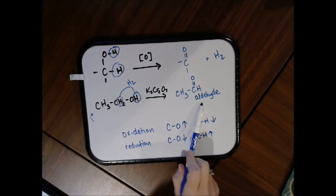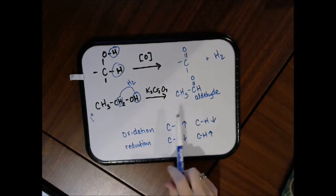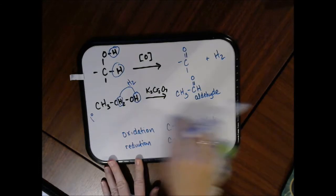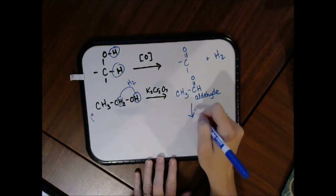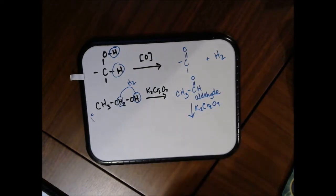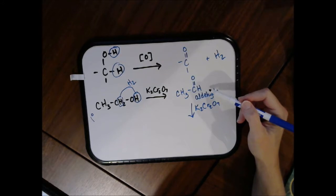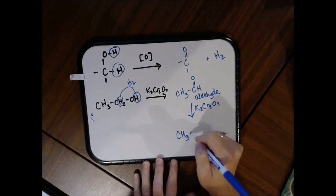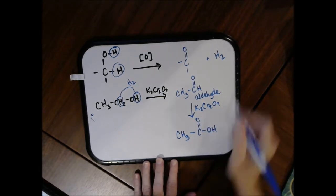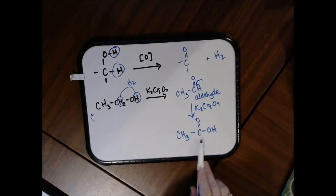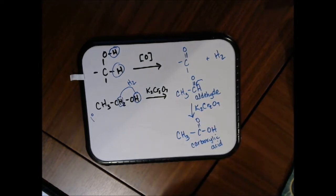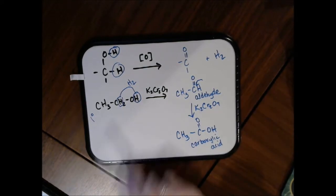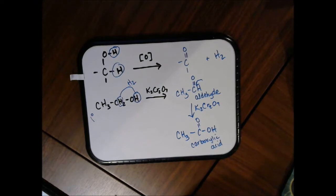When you produce an aldehyde, something continues to happen because aldehydes are also easily oxidized. The oxidizing agent is still present, so it continues to oxidize the aldehyde. When an aldehyde is oxidized, essentially an oxygen slips in with that hydrogen, and you get a carboxylic acid — a functional group we'll cover in the next week or two. So if you oxidize a primary alcohol, you'll get an aldehyde, and then it will continue to oxidize to a carboxylic acid.